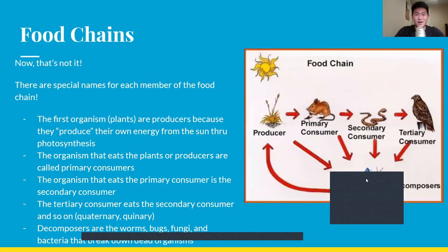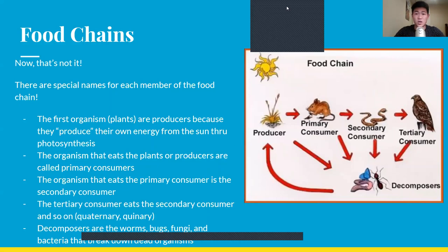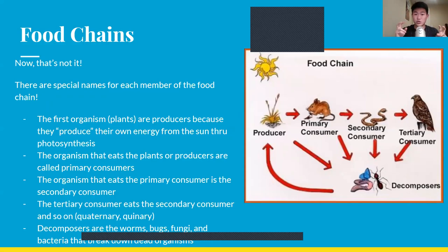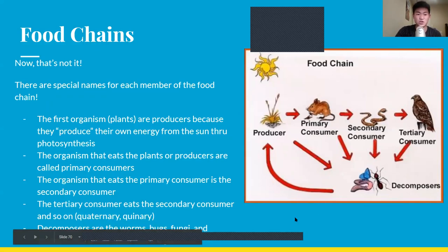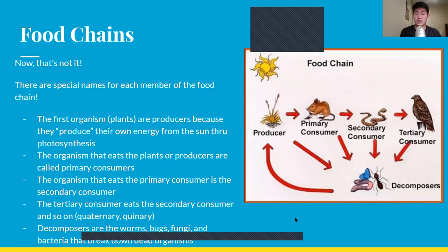There are special names for each member of the food chain. Plants are called producers because they produce their own energy from the sun through photosynthesis. The organisms that eat the producers are called primary consumers. The organism that eats the primary consumer is the secondary consumer. The tertiary consumer eats the secondary consumer. Decomposers are the worms, bugs, fungi, and bacteria that break down dead organisms.